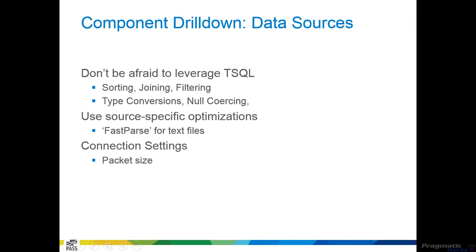If you're pulling data out of a flat file, you want to use FastParse if you trust your data source. The FastParse property essentially means there's a contract between SSIS and that flat file. As you're reading data, if there are any dates or numbers, SSIS will parse those automatically to make sure you're not passing the value 'A' into a number field. If we trust the data — if we know it came from the database or a cleansed mainframe — we can turn on FastParse to skip that parsing process and increase performance when reading data out of the flat file.